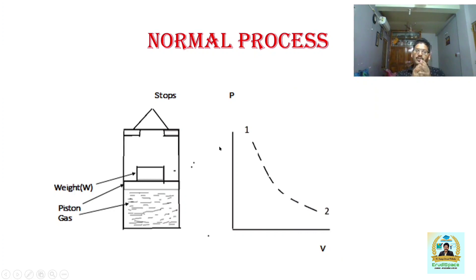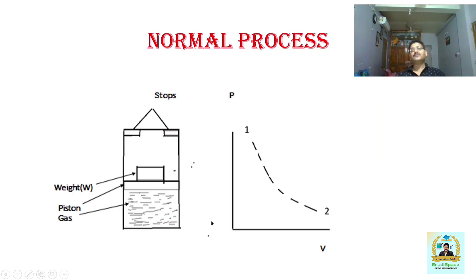Then we remove the weight. Due to the pressure being exerted, the piston moves up and stops at point 2, which is again in a state of equilibrium. However, all the intermediate states passed through are not in a state of equilibrium. As per classical thermodynamics, this process cannot be represented by a continuous line — a dotted line represents it instead. Analysis of such a normal process cannot be done in classical thermodynamics where equilibrium is very important.